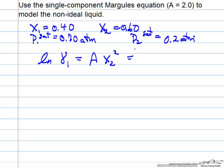The constant is 2, x2 squared, and then likewise for the log of gamma 2. So the log of gamma 1 is 2 times 0.6 squared, which equals 0.72.